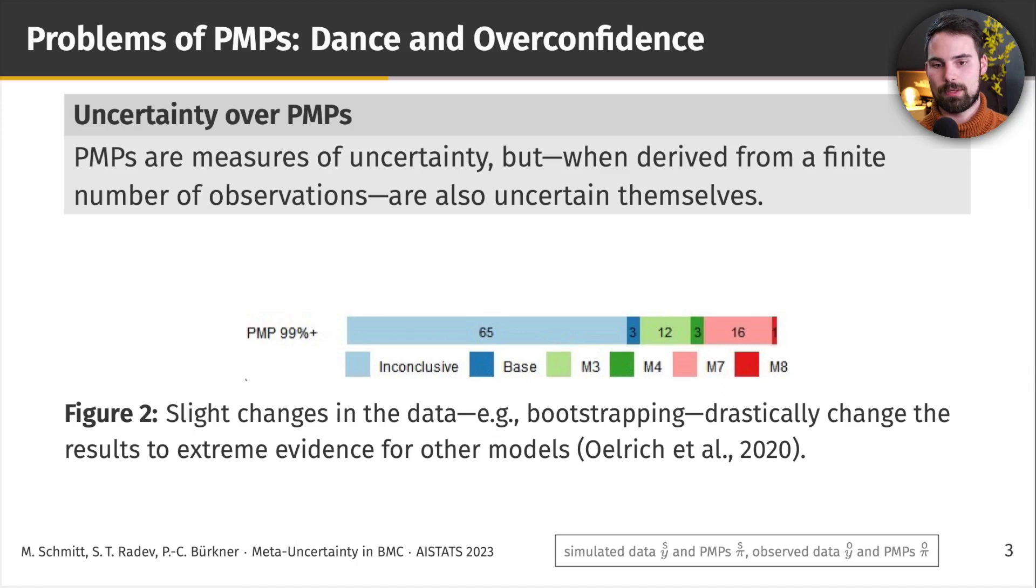So here's an illustration of that. In this setup from Ulrich et al., they have a fixed data set y, and instead of just computing the posterior model probabilities once, they do it a hundred times, and each time they do another bootstrapping sample, so resampling, or reshuffling, resampling of the data. So these data sets are slightly different. And what we see here are the results of this posterior model probability evaluation. We see that slight changes in the data through bootstrapping drastically changed the results to extreme evidence for other models.